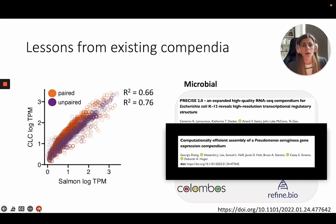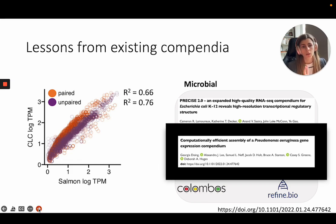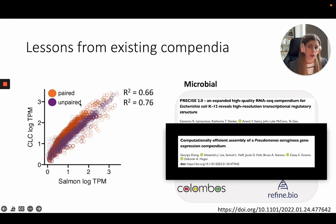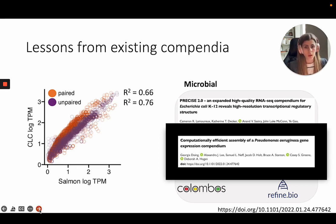To build this compendium, we learned some lessons from existing compendia — in particular one for Pseudomonas aeruginosa — where we learned two important lessons. The first was that when using a tool to quantify a gene called Salmon, which maps against a transcriptome, you need to use unpaired read mode even if you collected paired data. This is because microbes have polycistronic transcripts where genes from the same operon will be represented in different transcripts and so you need to map against them separately.